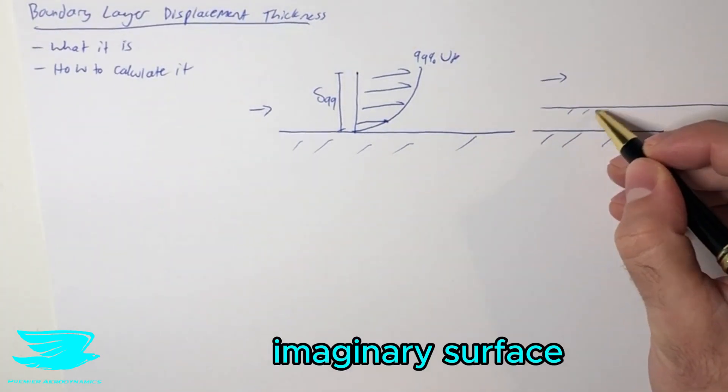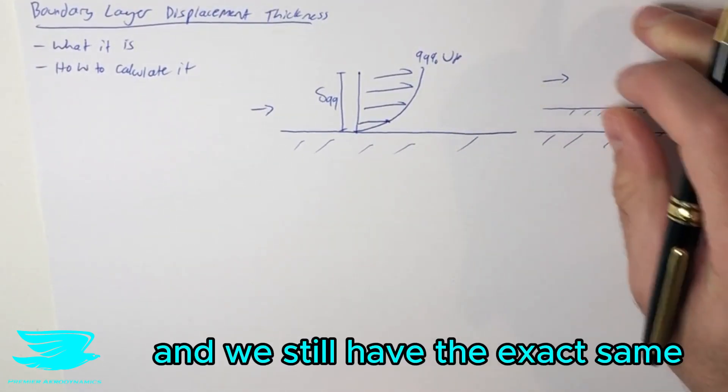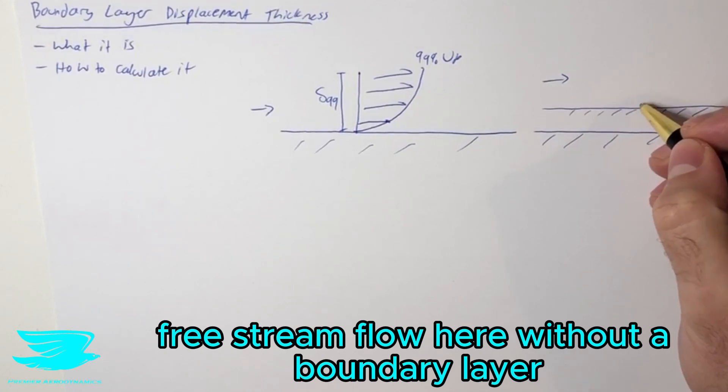how far would this surface be from this surface, and we still have the exact same freestream flow here without a boundary layer?